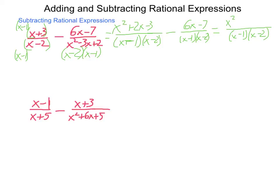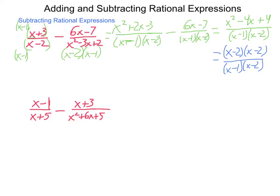2x minus 6x is negative 4x, and negative 3 minus negative 7 becomes plus 4. Factoring this numerator, we get x minus 2 times x minus 2, divided by x minus 1 times x minus 2. We have an x minus 2 in both numerator and denominator, so those simplify away. Our final answer is x minus 2 divided by x minus 1, with restrictions that x cannot equal 1 and x cannot equal 2.